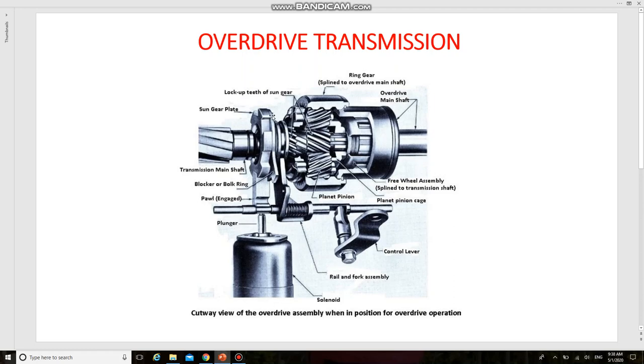The ring gear is splined to the outer case of the freewheel assembly which is a part of the overdrive mechanism or overdrive main shaft.